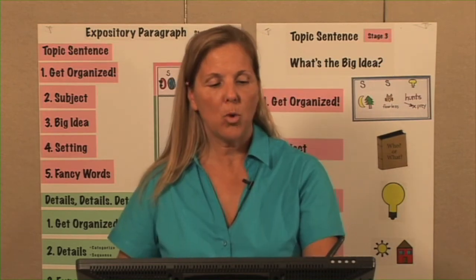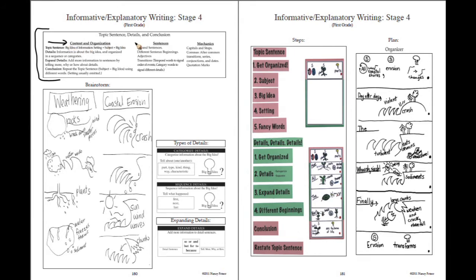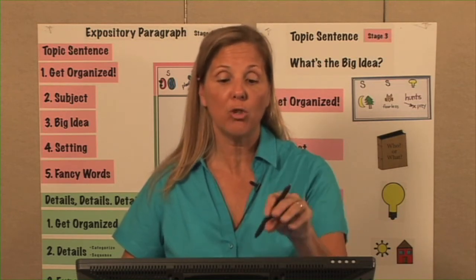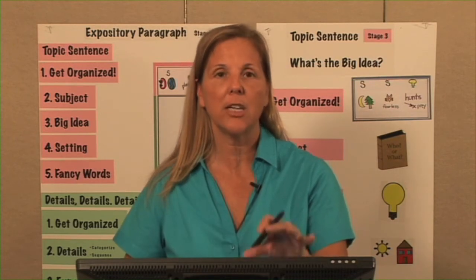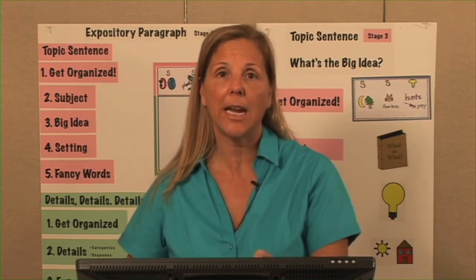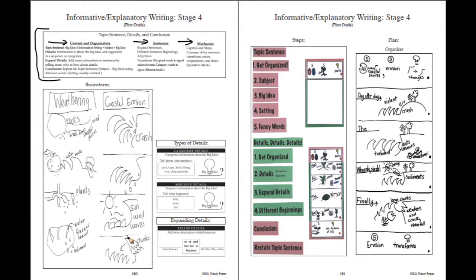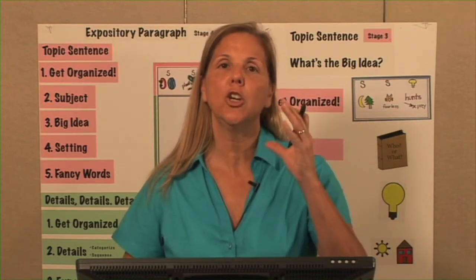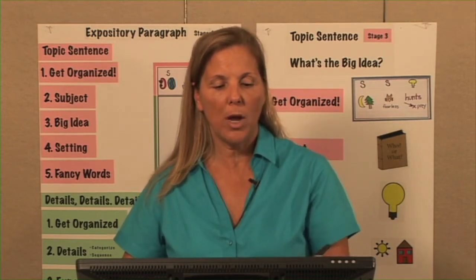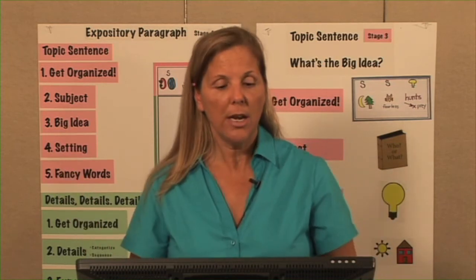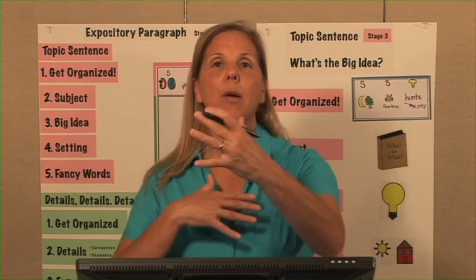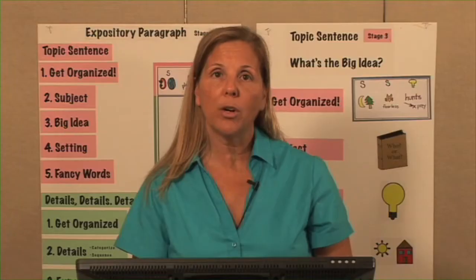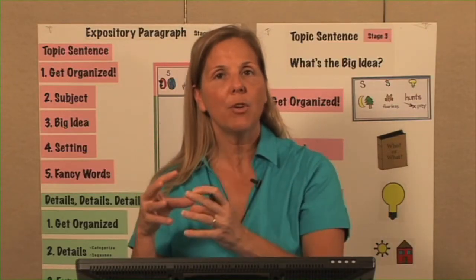Now let's turn to the next page. On page 180, you have your descriptor box that tells you, under content and organization, sentences, and mechanics, what skills you're teaching at this stage and what you expect children to master. Below, you'll see brainstorm. If students know the information, you always brainstorm first. In this example, children were studying an earth science unit on weathering and erosion. They brainstormed information and the teacher recorded it on the board, grouping it into categories — what information went together.